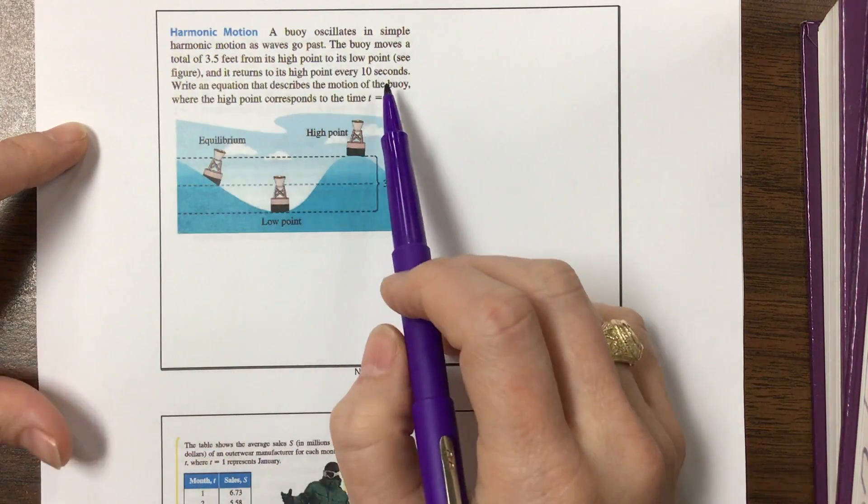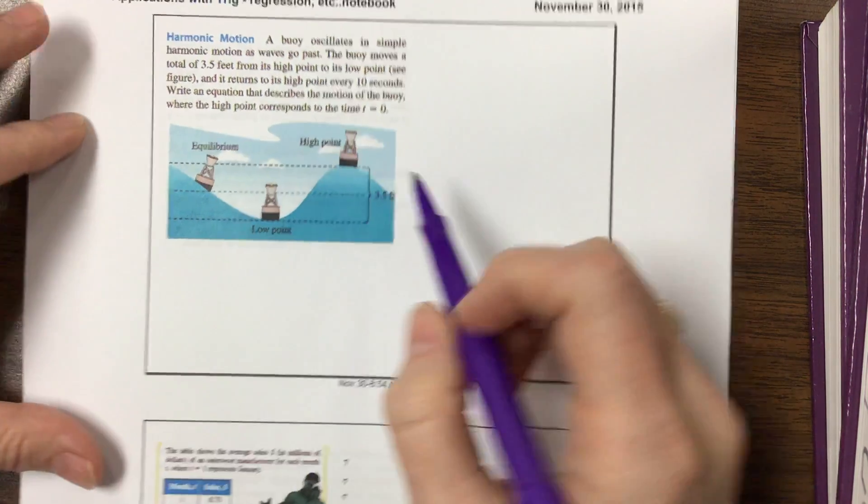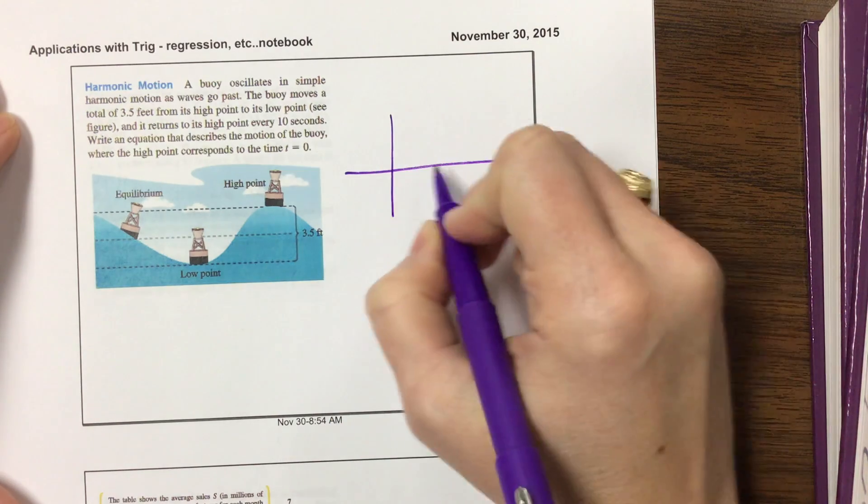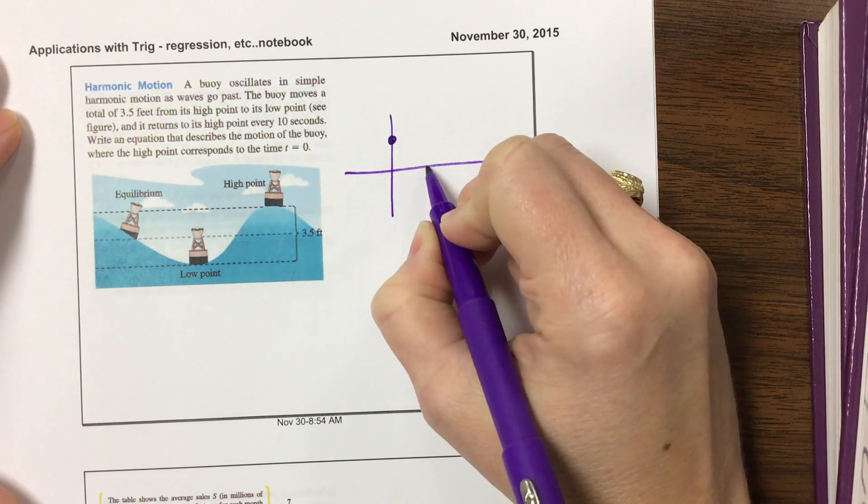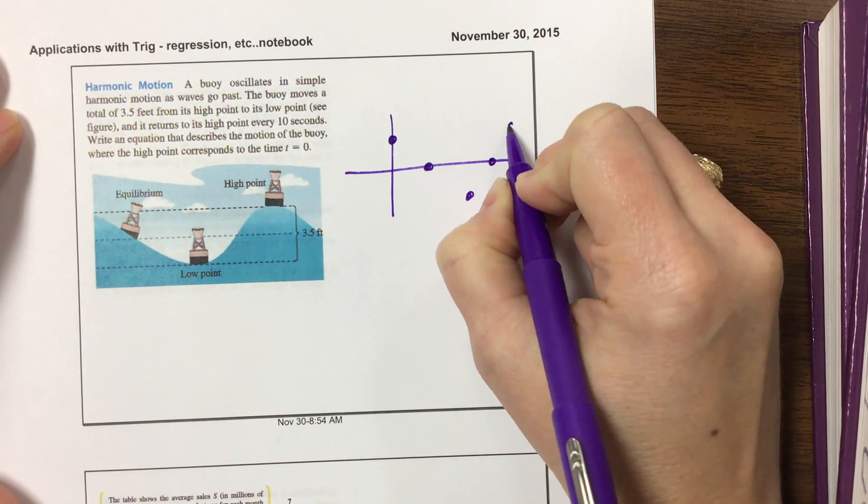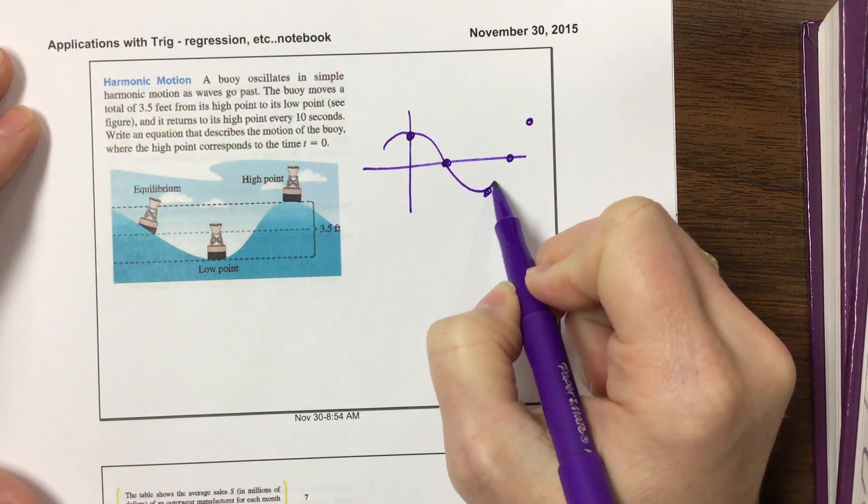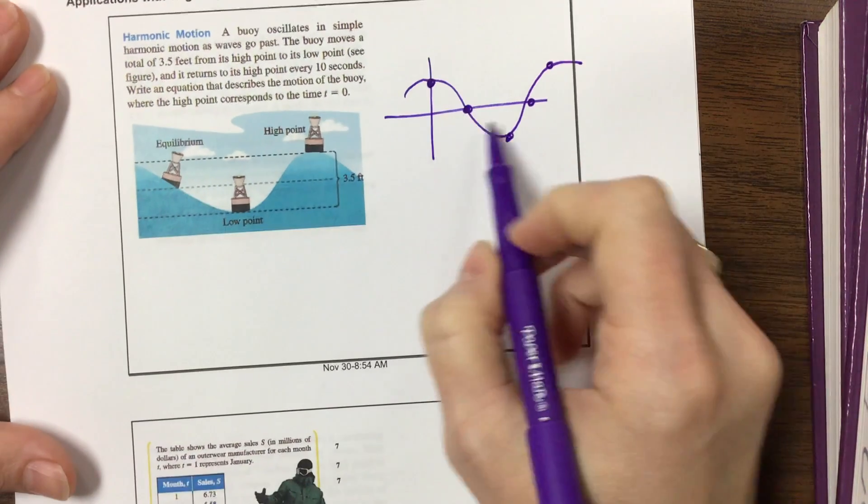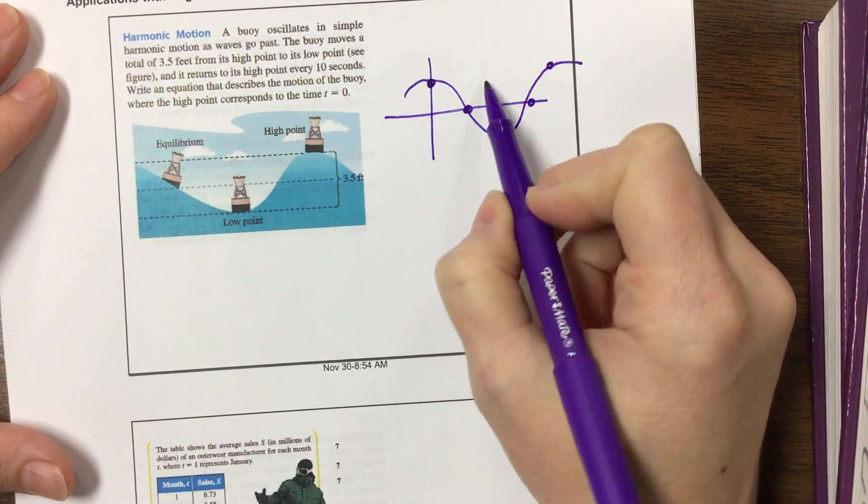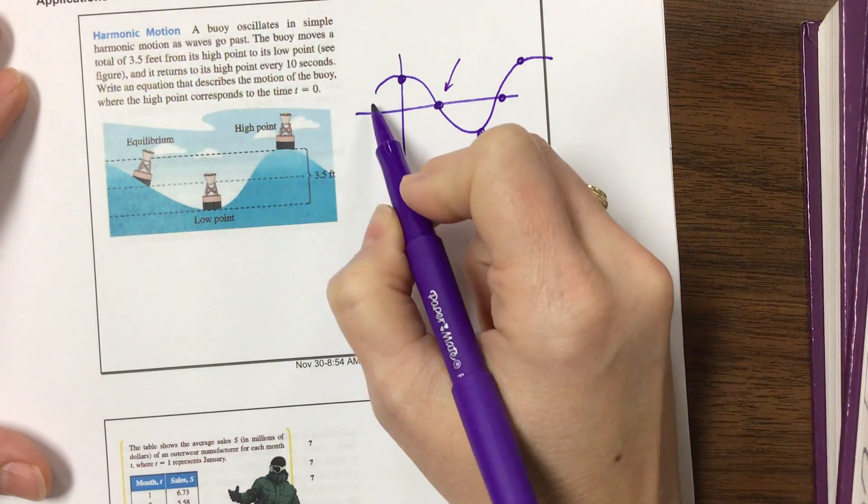So we're going to write an equation here. It says write an equation that describes where the high point corresponds to time t equals 0. So its high point is here. I can call this the equilibrium. It goes to here, it goes back to here, and it comes back something like that.